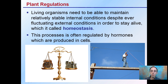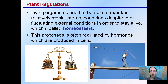Living systems need to be able to maintain relatively stable internal conditions despite ever-fluctuating external conditions in order to stay alive. This process of maintaining balance is called homeostasis — balancing internal conditions. This process is often regulated by hormones, which are produced in the cells to allow the plant, or in this case the organism, to counteract changes in external conditions and maintain that stable internal environment we call homeostasis.